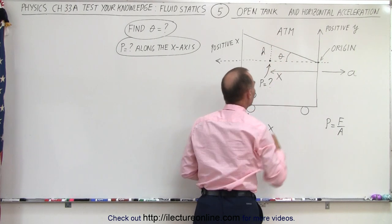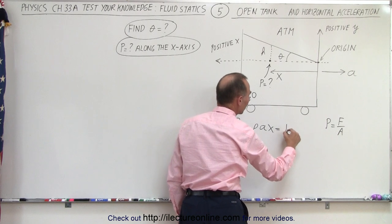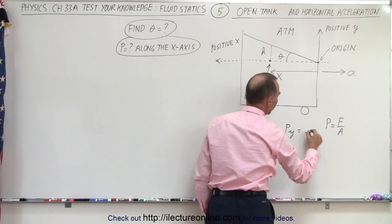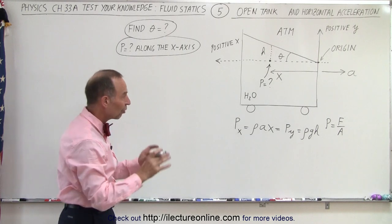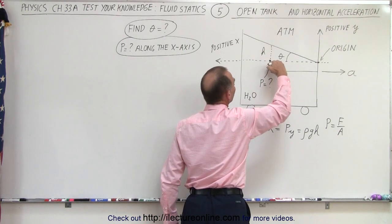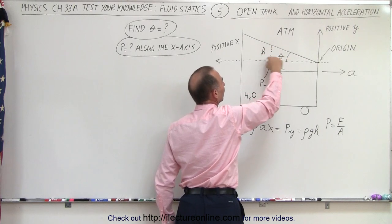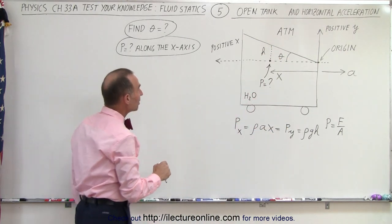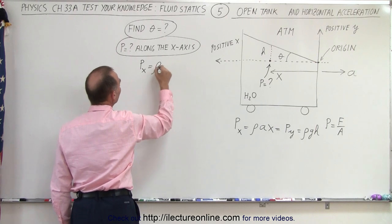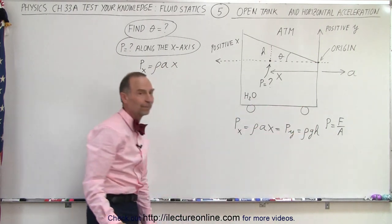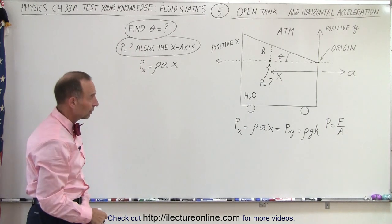If we know the height, we can say that the pressure in the x-direction — which equals ρ·a·x — must equal the pressure in the y-direction, which equals ρ·g·h. Those two pressures must be the same, causing liquid to be pushed up. The farther we go to the left, the greater the pressure, the greater the height. So the pressure along the x-axis is always equal to ρ·a·x, which causes water to be pushed upward, producing that slanted slope at the top of the water.